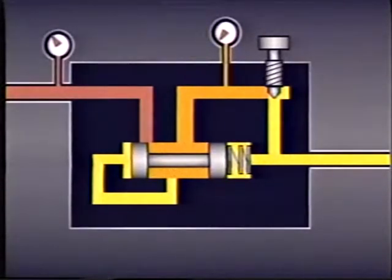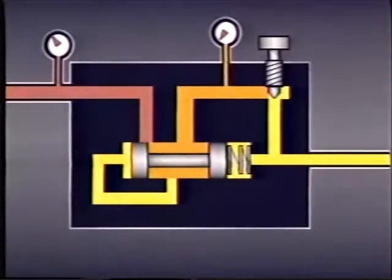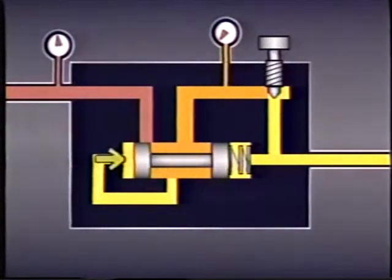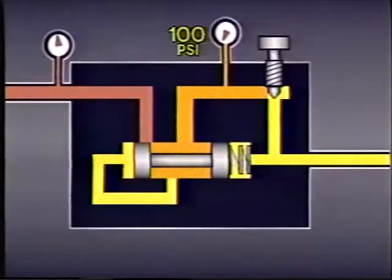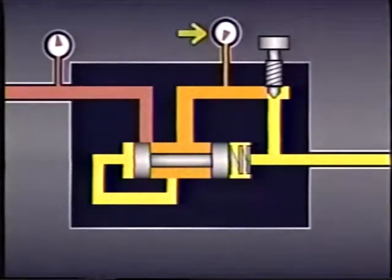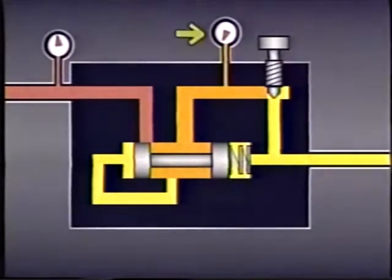The remaining 400 PSI is converted into heat and carried away by the fluid. If upstream pressure rises, the spool continues to shift. For example, if inlet pressure rises to 600 PSI, the spool will shift a little more. The smaller restriction will lower pressure downstream of the restriction to 100 PSI, and the remaining 500 PSI will be carried away as heat. As long as there is no load, the pressure just downstream of the restriction will equal the pressure of the spring. The difference between this pressure and the inlet pressure is always converted into heat.